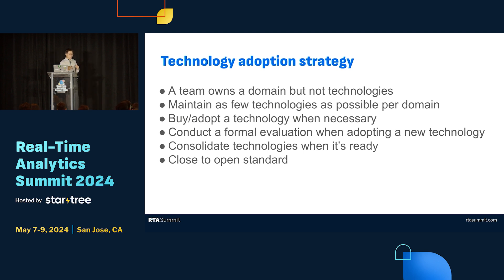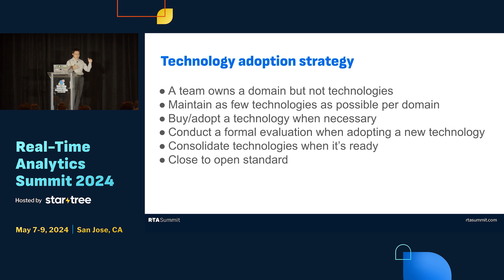We also want to buy or adopt technology when there are strong business needs, and when that happens, conduct a very formal evaluation from different angles. Temporarily we can have additional technology if the existing one doesn't have something the company needs. But we want to consolidate when ready — meaning we can achieve feature parity in our primary technology — and still adhere to the principle of maintaining as few technologies as possible.